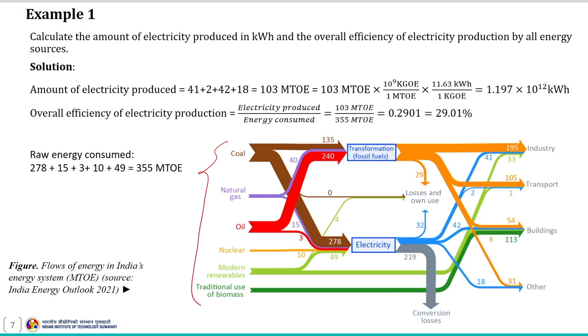To understand the concept of energy flow in more detail, let us solve a small example. This schematic gives a visual representation of the flow of energy in India's energy system. The major resources are coal, natural gas, oil, nuclear, modern renewables, and traditional use of biomass. These resources undergo various transformation processes for fuels and electricity generation. During this process, substantial conversion losses occur mainly in electricity generation — the small arrows indicate losses and own use.